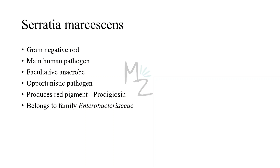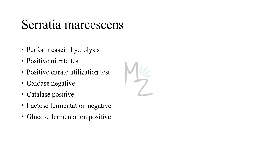Serratia marcescens is a gram-negative rod and a main human pathogen. It's an opportunistic pathogen, meaning whenever it finds an opportunity to cause an infection it will. It's a facultative anaerobe, produces a red pigment called prodigiosin, and due to that pigment it forms red-pigmented colonies on culture. It belongs to the family Enterobacteriaceae and performs casein hydrolysis. It shows a positive nitrate test and a positive citrate utilization test. It is oxidase negative but catalase positive.